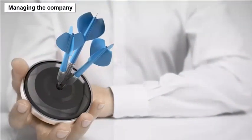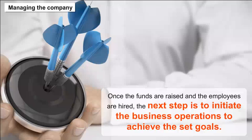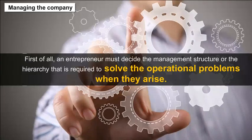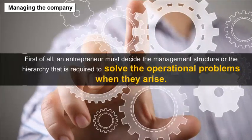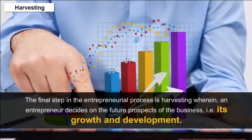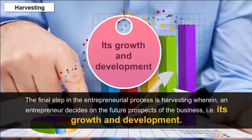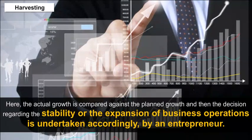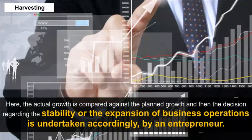Managing the Company. Once funds are raised and employees are hired, the entrepreneur initiates business operations to achieve set goals. The entrepreneur must decide the management structure or hierarchy required to solve operational problems as they arise. Harvesting. The final step is harvesting, wherein the entrepreneur decides on the future prospects of the business — its growth and development. Actual growth is compared against planned growth, and then the decision regarding stability or expansion of business operations is undertaken accordingly.